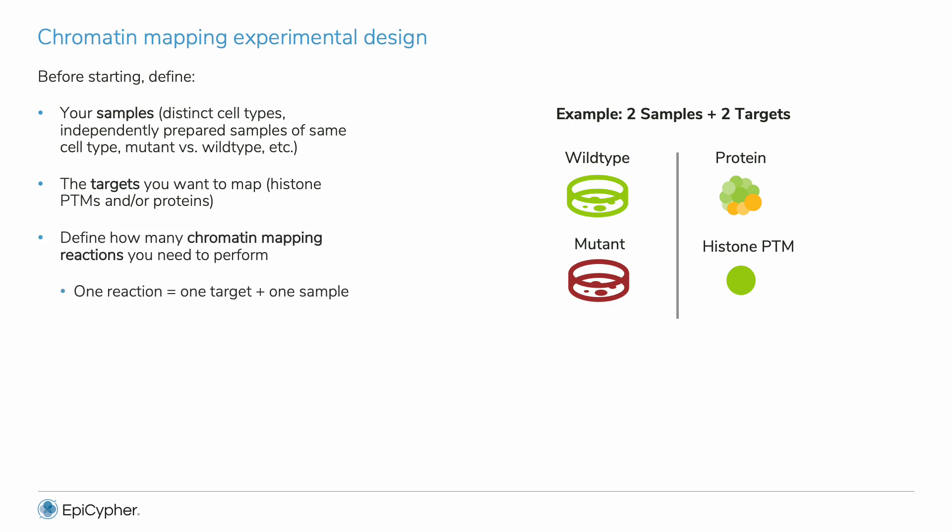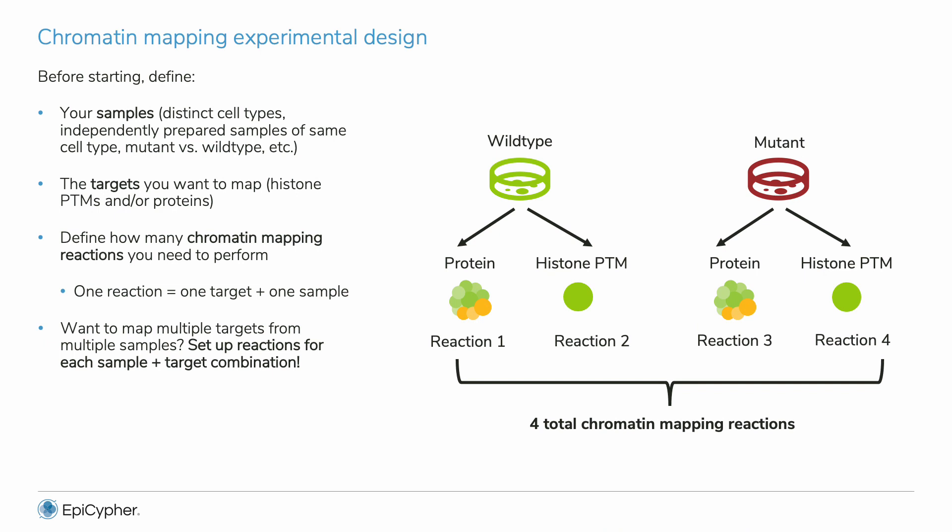Third, calculate how many reactions you need to set up. It is important to remember that in mapping assays, you can only map one target in one sample per reaction. So for my example, to map two targets in two samples, I need to set up four reactions. I also need to make sure I have enough of each sample to perform two reactions.